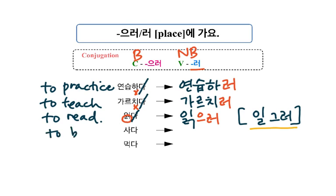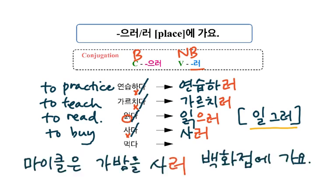사다 means 'to buy.' There is no 받침 before 다, so take out 다 and add 러. 마이클은 가방을 사러 백화점에 가요. Why does 마이클 go to the department store? In order to buy a bag. 마이클 goes to the department store to buy a bag.